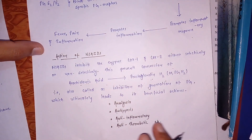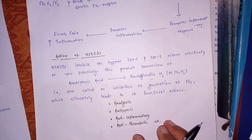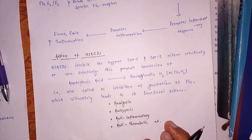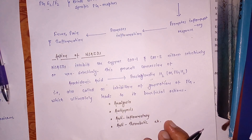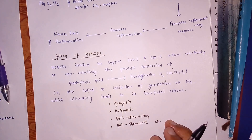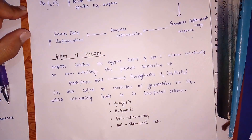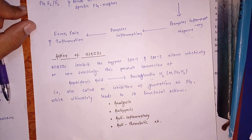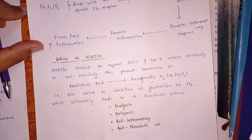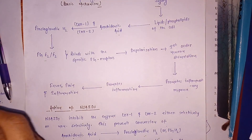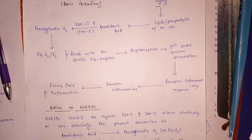This ultimately leads to the beneficial actions of NSAIDs: analgesia (prevention of pain), nerve ending sensitization reduction, antipyresis, anti-inflammatory effects, anti-thrombotic effects, as well as closure of ductus arteriosus in newborn babies. This is the basic mechanism of NSAIDs.